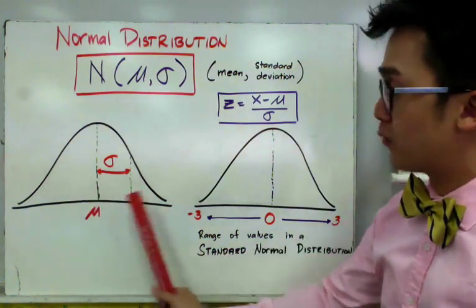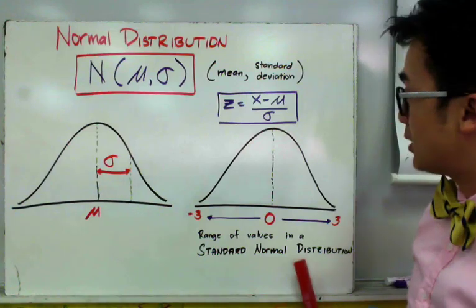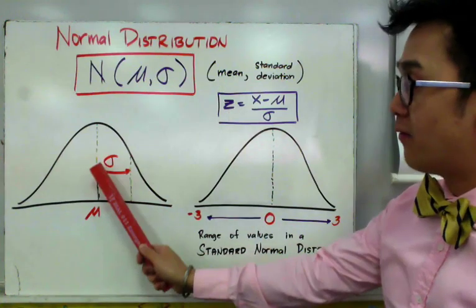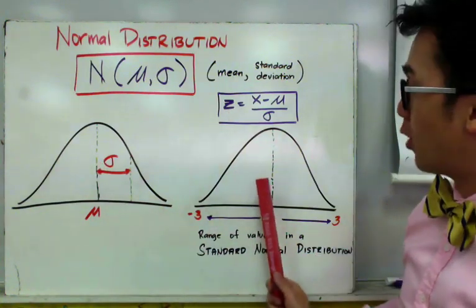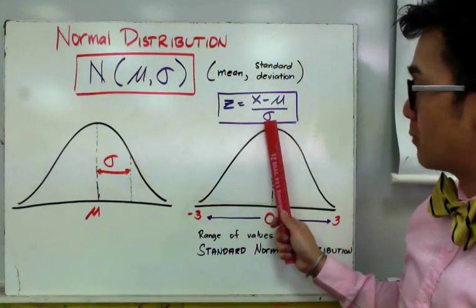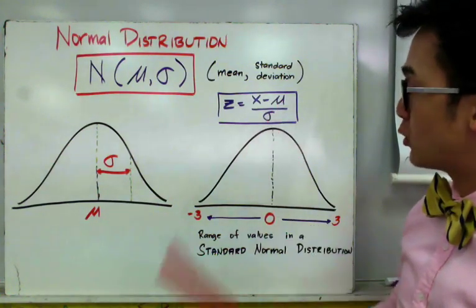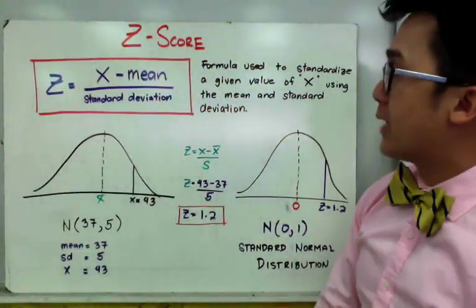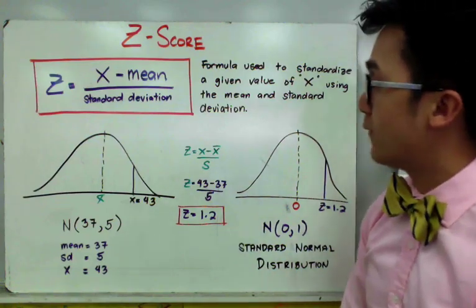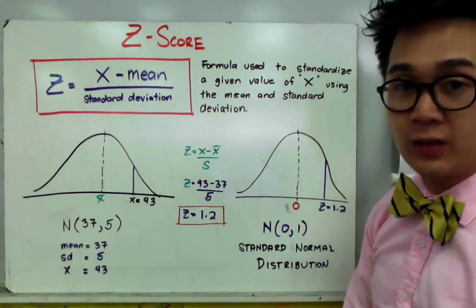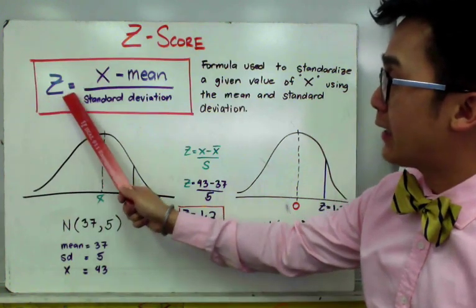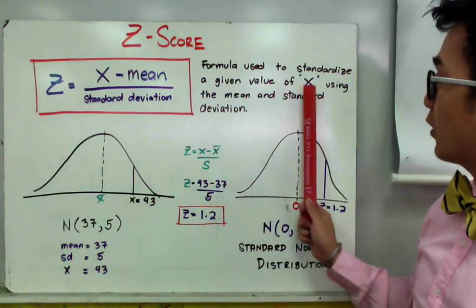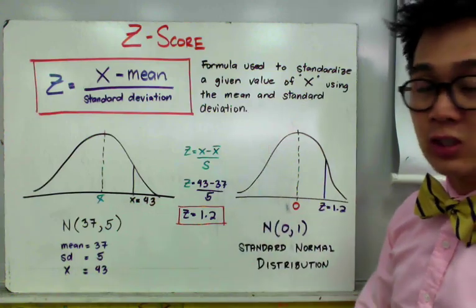To standardize a given normal distribution from raw data into its standard normal form, we use a formula to convert the raw value into its standardized form: x minus mu, all over sigma, where mu is the mean and sigma is the standard deviation. The z-score is what we need to find the standardized value of a given raw data point. So z equals x minus mu, all over the standard deviation — this is the formula we use to standardize x using the mean and standard deviation of our sample.